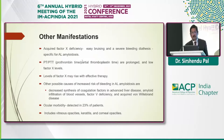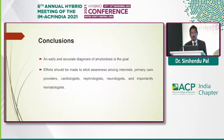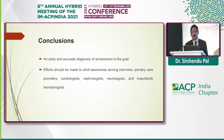Hematological manifestations: easy bruising due to PT and APTT prolongation; factor X levels may rise with effective therapy. These coagulation abnormalities, as seen in liver disease, are due to amyloid infiltration in blood vessels. To conclude: an early and accurate diagnosis of amyloidosis should be the goal, and effort should be made to elicit awareness among internists, primary care providers, cardiologists, nephrologists, neurologists, and especially hematological colleagues so that we can come to an early diagnosis. Thank you.